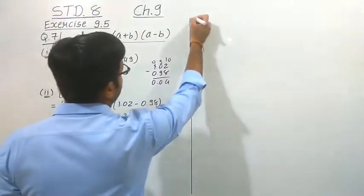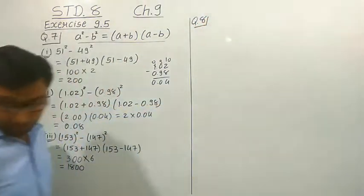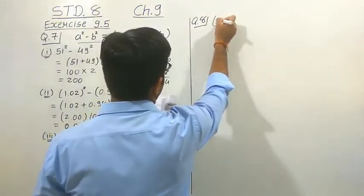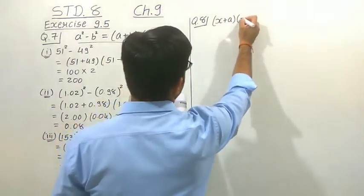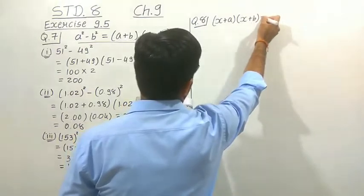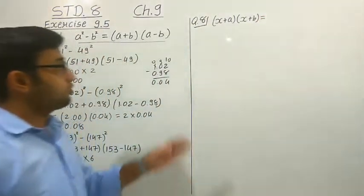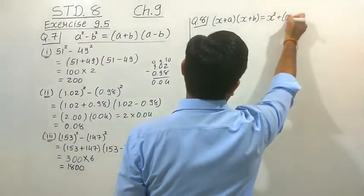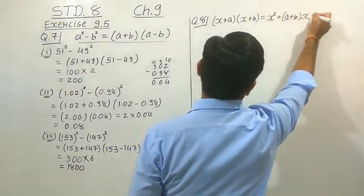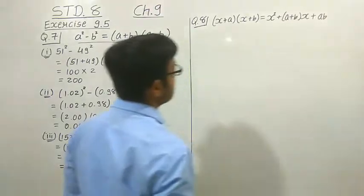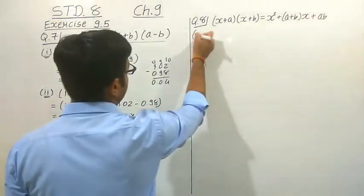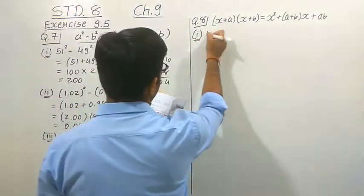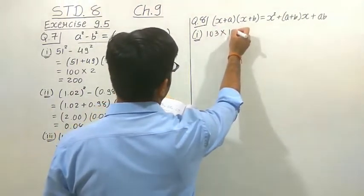Now let us study question number 8. Here we have to use the identity x plus a, into x plus b. This is Identity number 4: x plus a into x plus b equals x squared plus a plus b into x plus ab. The first subquestion we have to solve using this identity is 103 multiplied by 104.